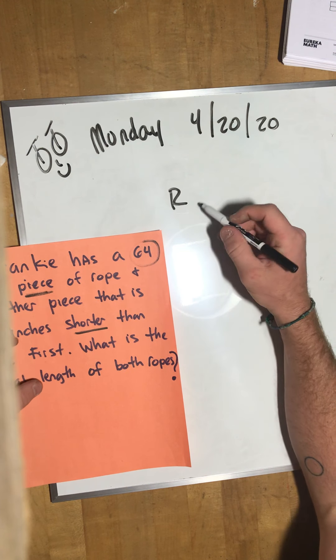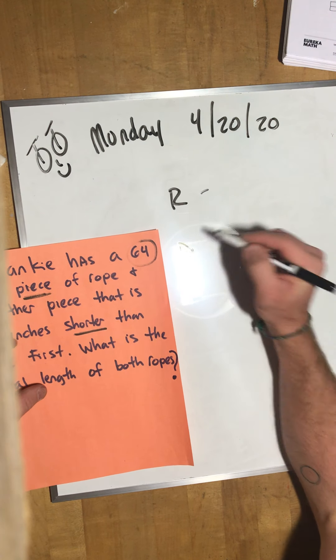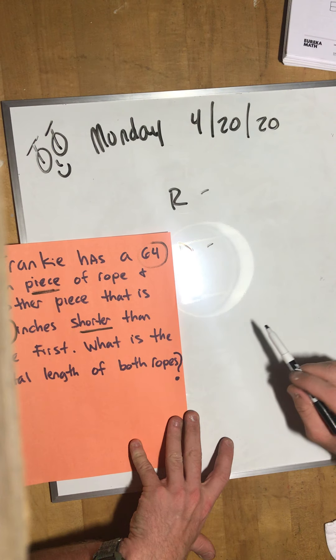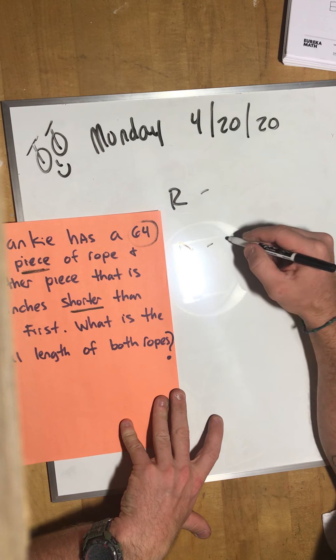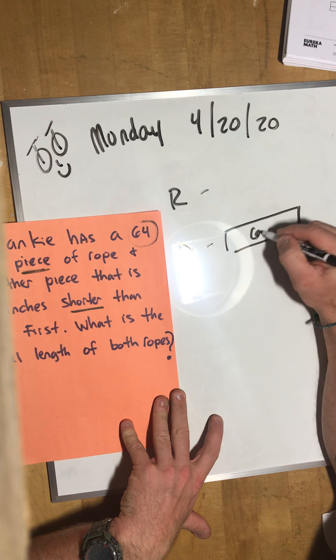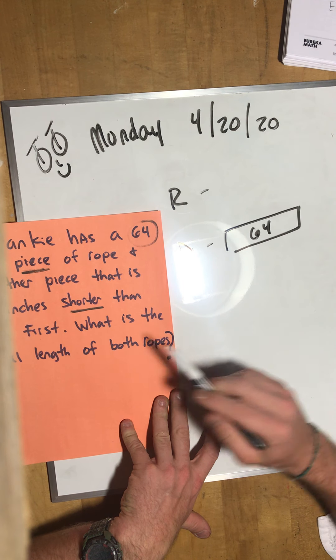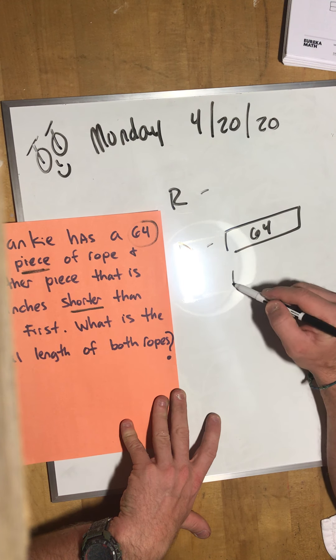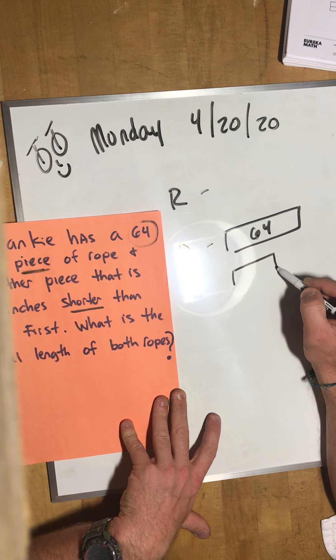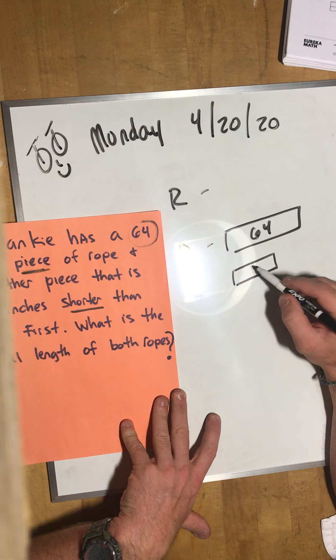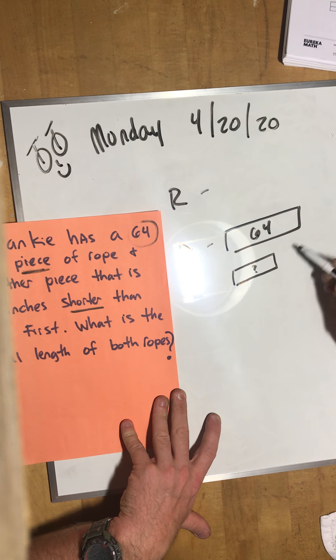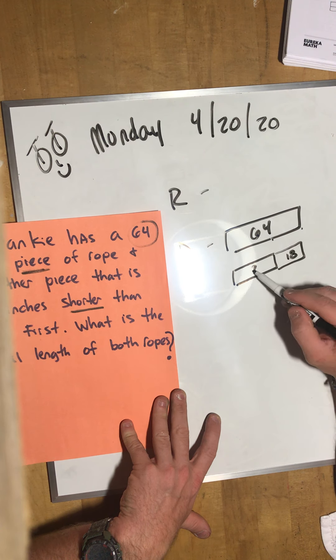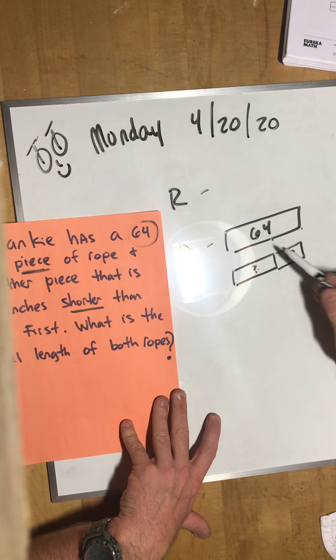Frankie has a 64 inch piece of rope and another piece that is 18 inches shorter than the first. Let's read, draw, write. Let's draw it out. Here we go. One piece that is 64 inches. There's my diagram for 64 inches.